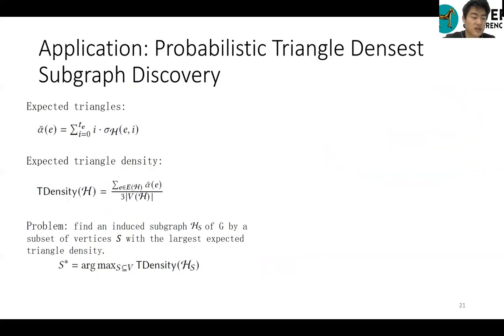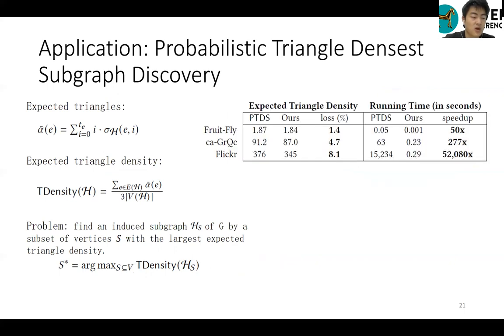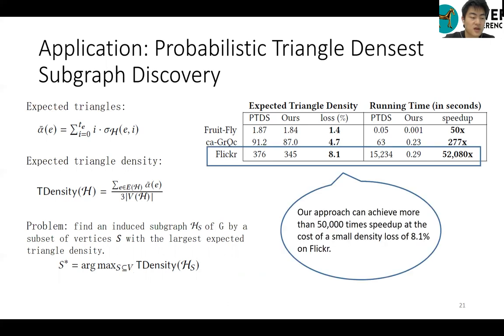To validate the application of k-gamma-trust indexing, we conduct an application for finding probabilistic triangle-dense subgraph. The problem is to find a subgraph with the largest probabilistic triangle density over an uncertain graph. Our idea is to first find a k-gamma-trust H, and then apply a variant of triangle-dense subgraph discovery method on H for determining the answer. Our approach can achieve more than 50,000 times speed-up at the cost of a small density loss of 8.1% on Flickr.